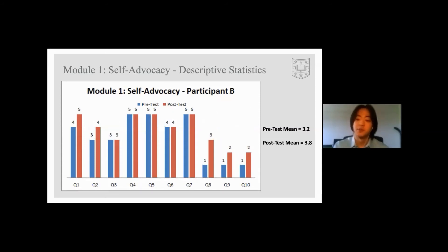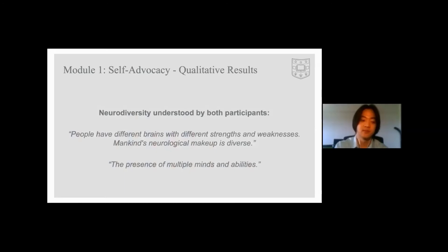Participant B demonstrated the greatest self-perceived improvement for question eight, which is about their ability to state academic accommodations guaranteed to them by law. For the qualitative results of module one, because we had only two participants, we found it more valuable to focus on the post-test results of the individuals to understand their knowledge at the end of the program. Both students demonstrated a great understanding of what neurodiversity is, stating that 'people have different brains with different strengths and weaknesses' and 'mankind's neurological makeup is diverse and the presence of multiple minds and abilities.'